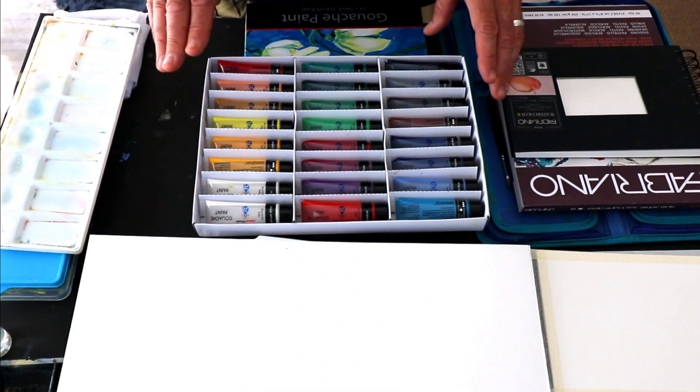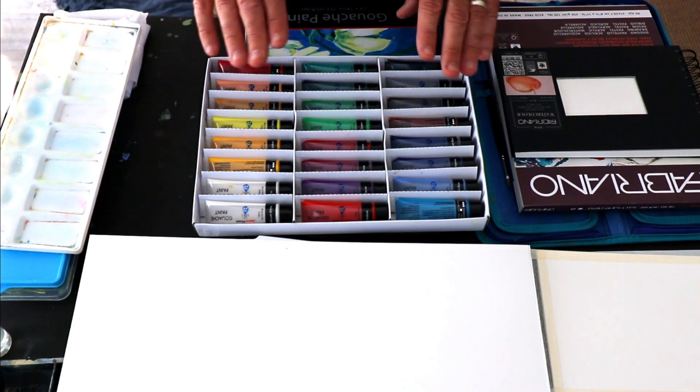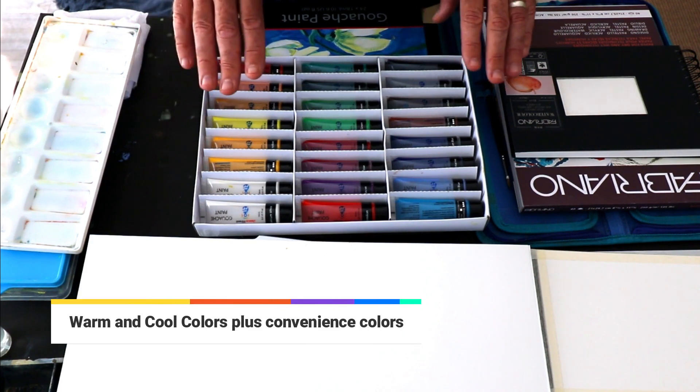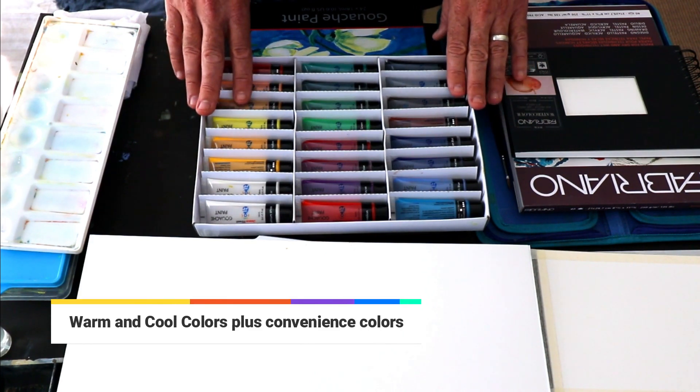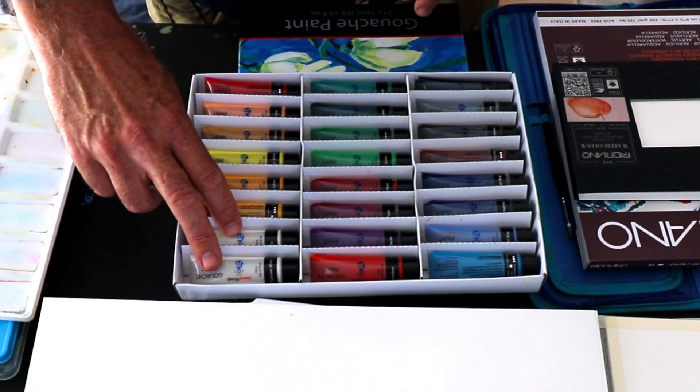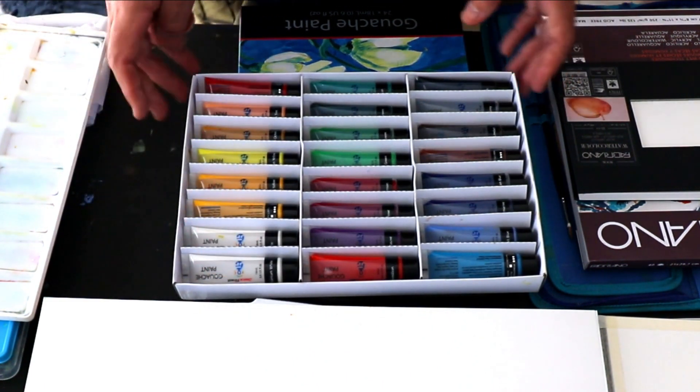What I suggest is that you have a set of colours that cover the warm and cool range for your primary colours and also some important convenience colours and of course plenty of white paint that always forms part of your gouache set up.